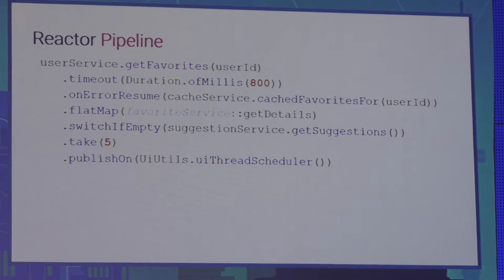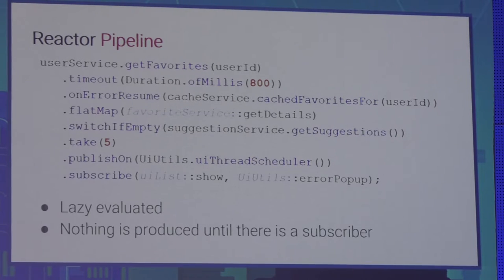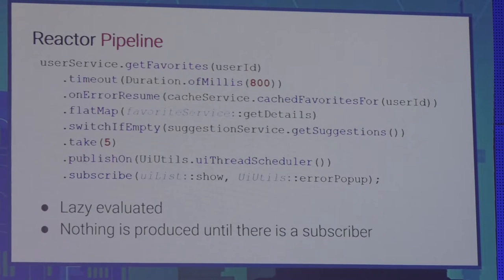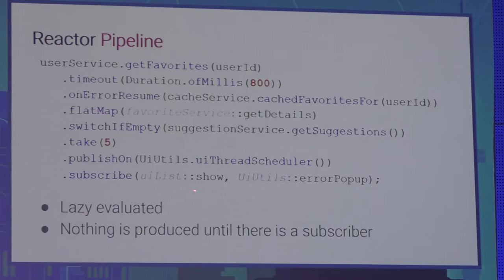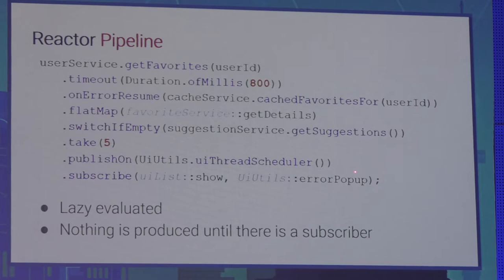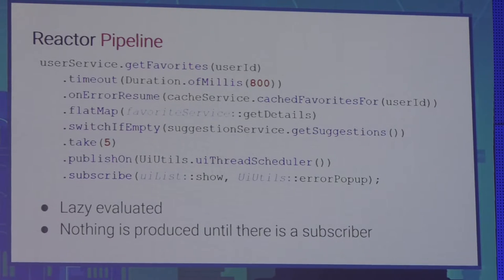Having this pipeline code, nothing will actually happen until there is a subscriber — similar to Java streams, it is lazy and won't execute until someone subscribes. The producer will not produce any data until someone needs it. By calling subscribe, you say that on success you want to show results in a UI list, or on error you want to show an error popup. Nothing is produced until there is a subscriber who needs it.